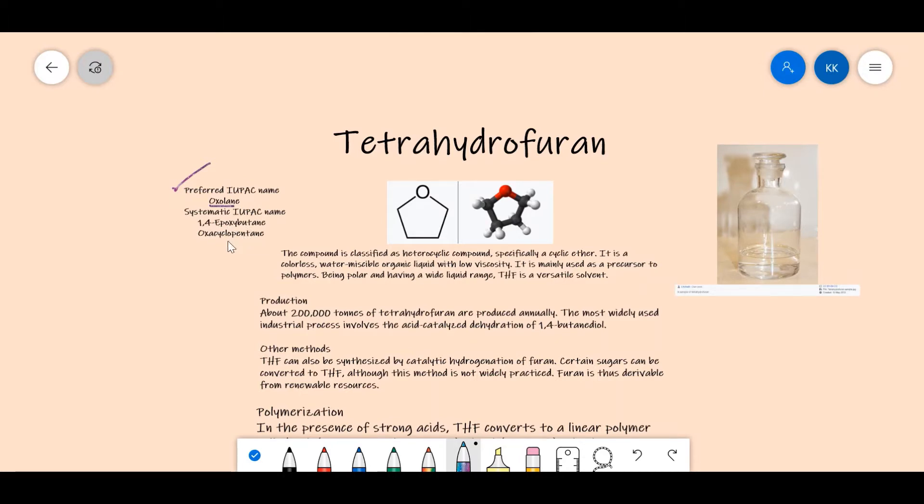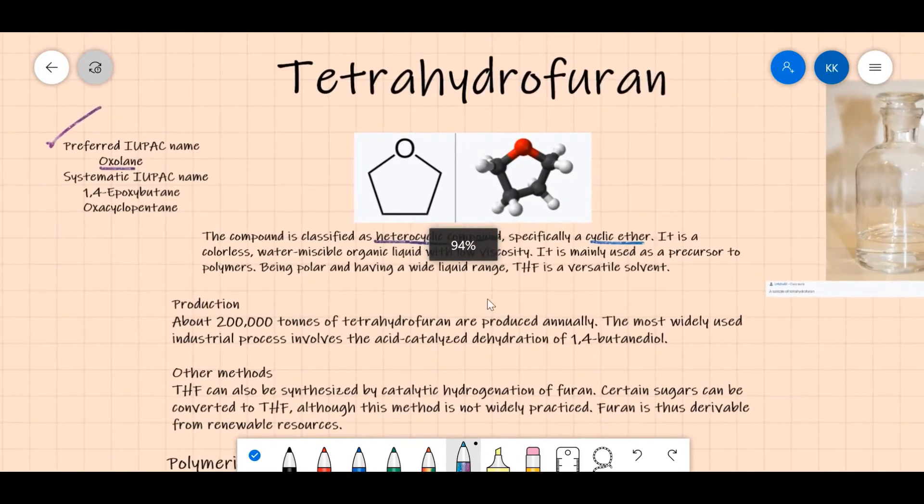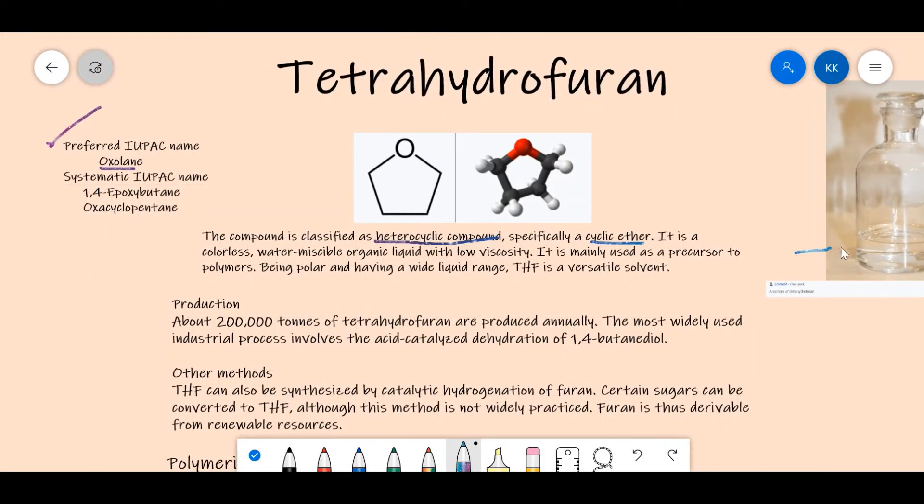The compound is classified as a heterocyclic compound, specifically a cyclic ether. Heterocyclic meaning that the chain has a heteroatom in it, which is the oxygen atom right here. It is a colorless, water-miscible organic liquid with low viscosity. You can see in this photo right here as well that it is colorless and does not look quite viscous.